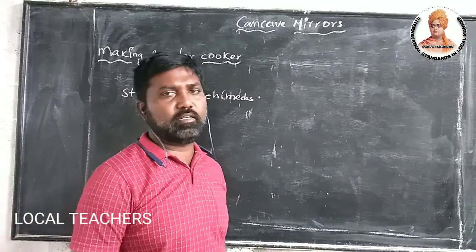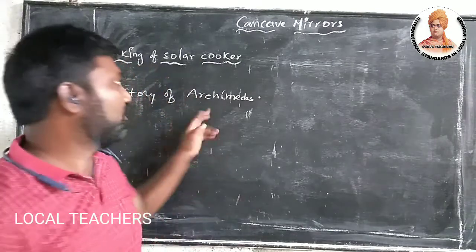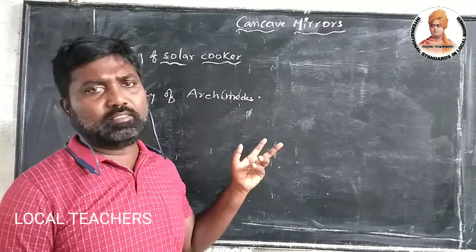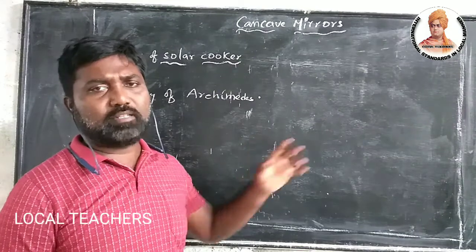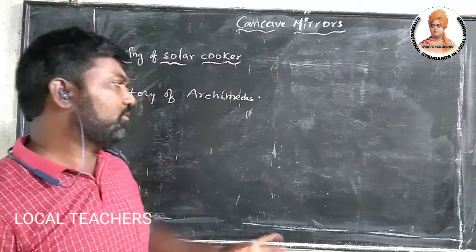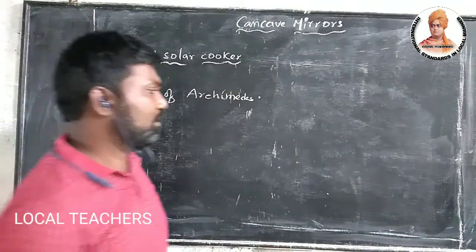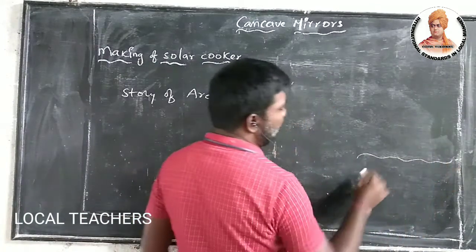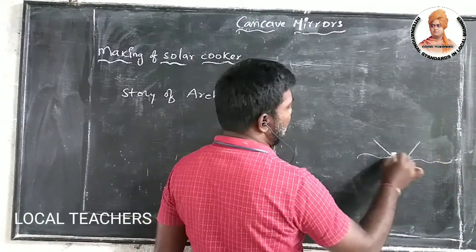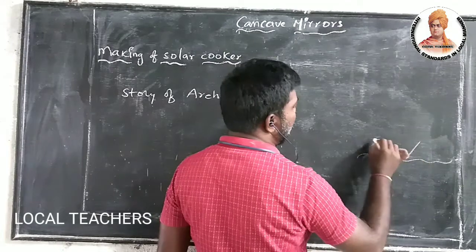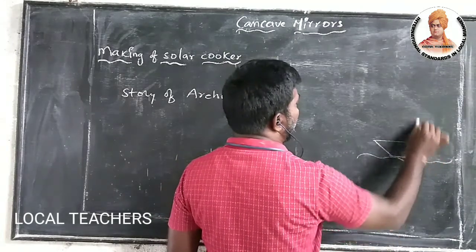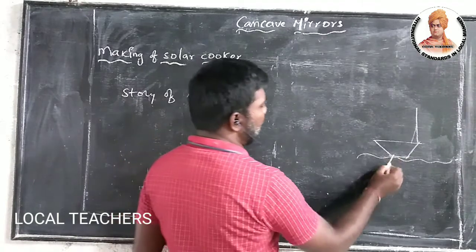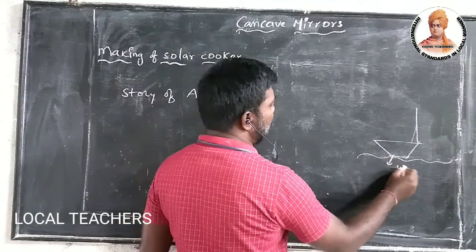In the textbook, one story is given — the story of Archimedes. He used some mirrors to burn ships in the sea. In those previous days, most of the ships were made of wood only.